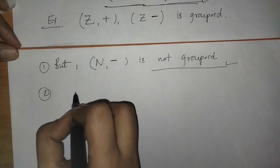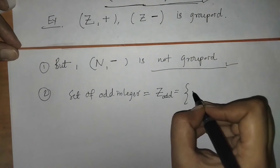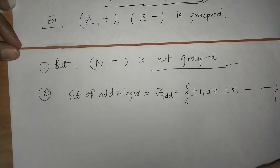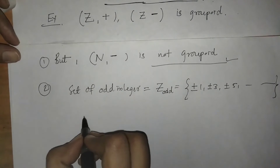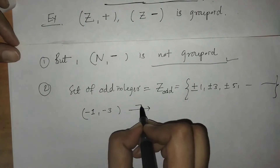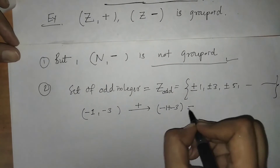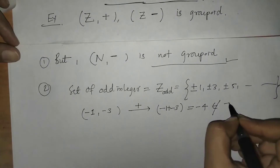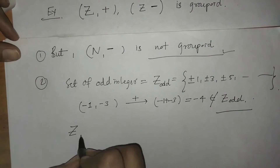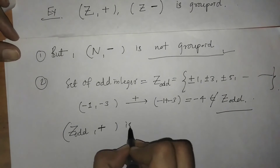We can take another example: the set of odd integers. The elements are plus or minus 1, plus or minus 3, plus or minus 5, and so on. If we operate on any two elements — say, minus 1 and minus 3 — under the operation addition, we get minus 1 plus minus 3 equals minus 4, and that does not belong to the set of odd integers. So we say that the set of odd integers with addition is not a groupoid.